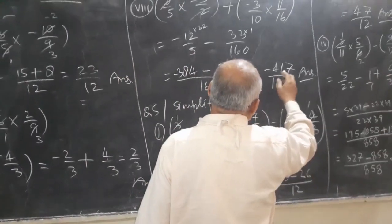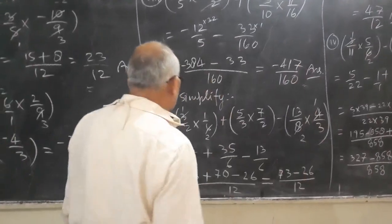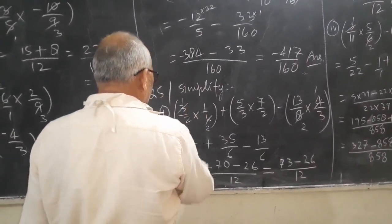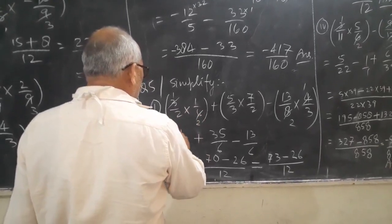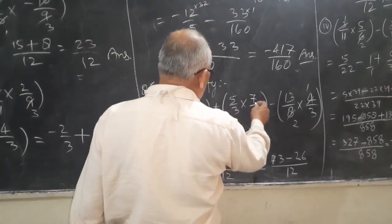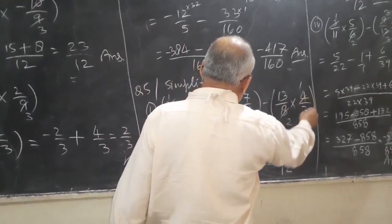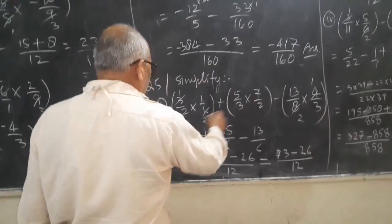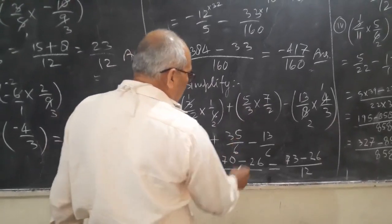Now question number 5: simplify first 3 by 2 into 1 upon 6, plus 3 by 2 into 1 upon 6, plus 3 by 2 into 6, plus 5 upon 3 plus 7 upon 2 minus 13 upon 8 into 4 upon 3. Since 4 divides 8, solving this gives 1 upon 2 plus 35 upon 6 minus 3 upon 6.